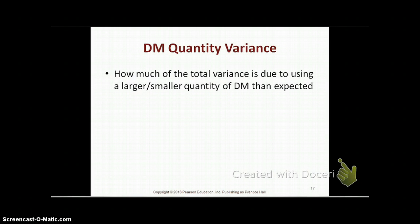The next variance is the direct material quantity variance. The quantity variance measures how much of the total variance is due to using a larger or smaller quantity of direct materials than expected. Going back to the Starbucks example, we anticipated using two teaspoons of coffee per cup. But let's say the person preparing the coffee dropped one teaspoon on the floor, so now they used three teaspoons — a larger quantity than anticipated when preparing the budget.